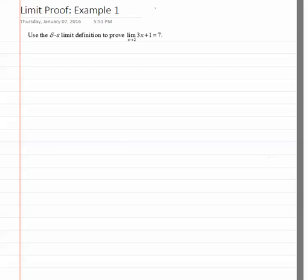In this video, we're going to work through a delta epsilon proof for a linear function. In the problem, we see limit as x approaches 2 of 3x plus 1 equals 7.